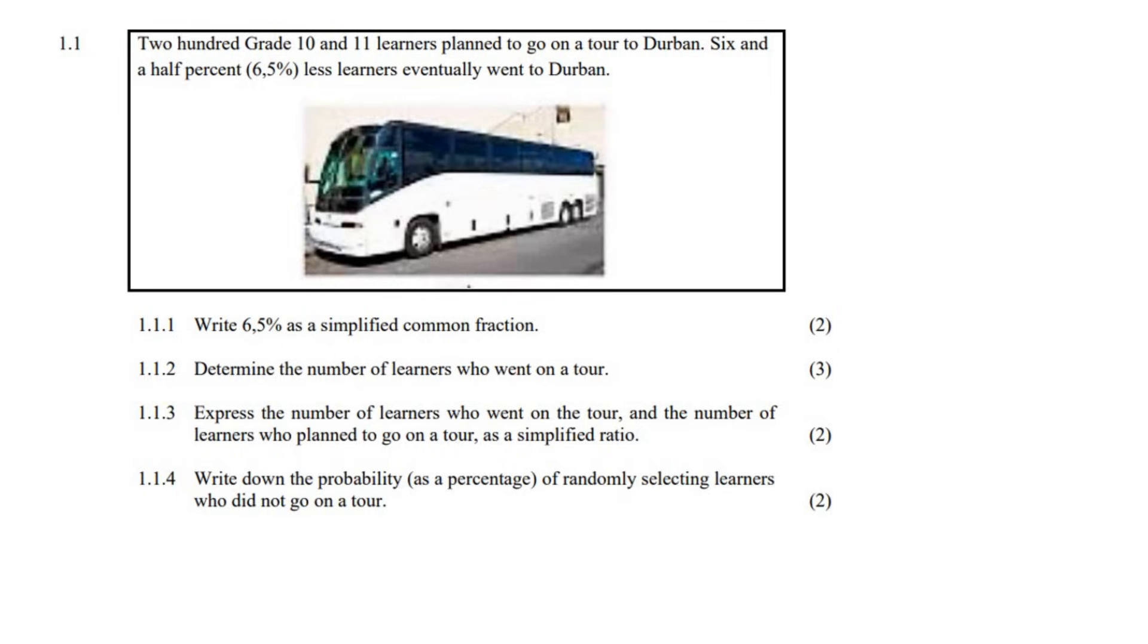Okay, so let's just get that straight. Two hundred grade 10 and 11 learners. So it doesn't mean 200 grade 10 and 200 grade 11. It means 200 altogether. Well, at least that's what I think. It could be misinterpreted, but I definitely think it's 200 altogether.